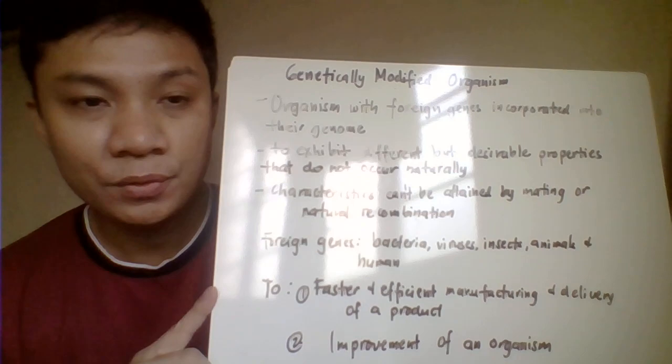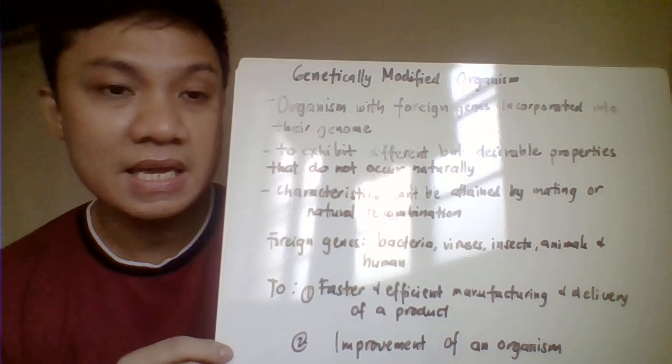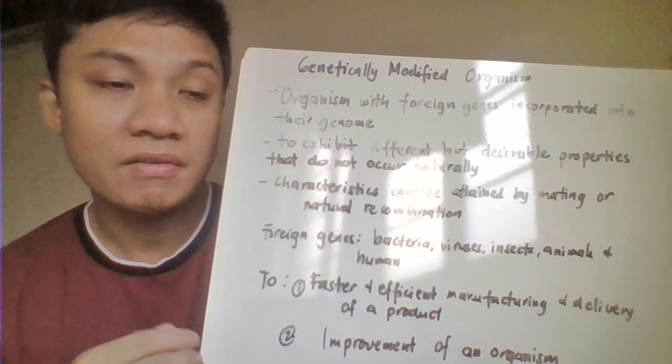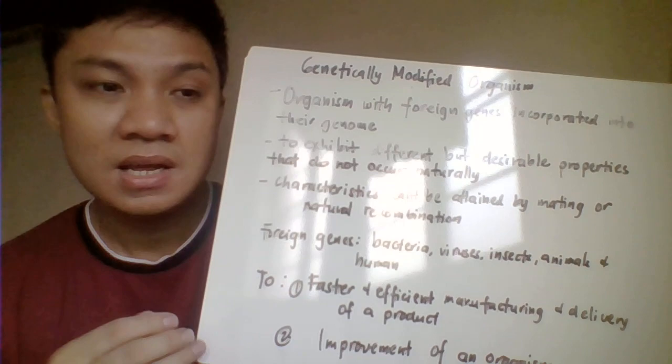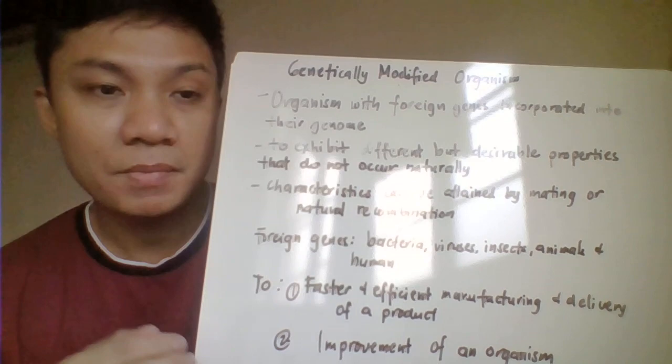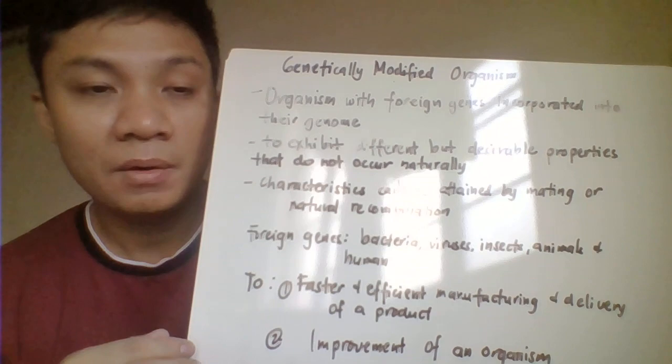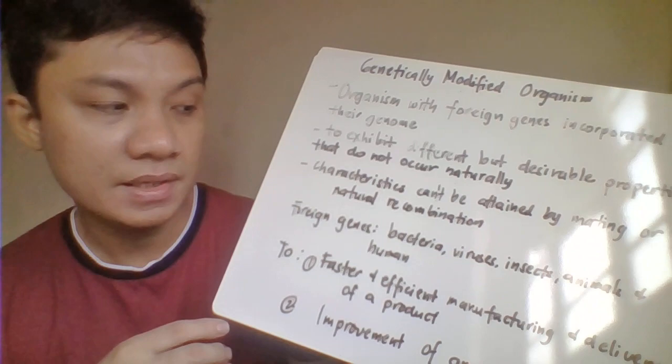Once you introduce genes from foreign organisms to your host DNA, that host DNA would assume the same characteristics of the gene, or it would produce a product because of the incorporation or combination of that foreign DNA. This is done because the host organism does not naturally possess that particular trait or characteristic, and you could not achieve an improved version of the organism through natural mating or natural recombination.